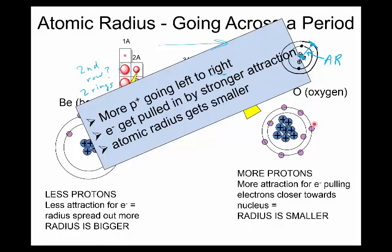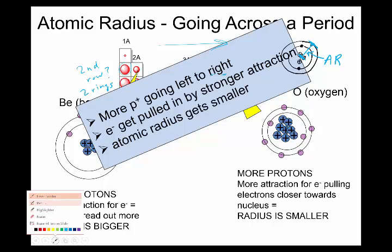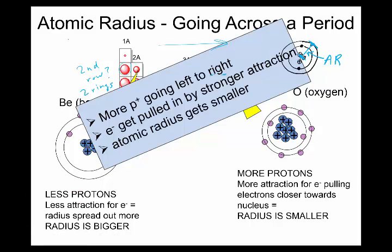All right, so one important thing to note here is if there's more attraction, so the two, these two trends, atomic radius and ionization energy, they go hand in hand. Ionization energy is defined as the amount of energy needed to pull away one of these electrons, to physically remove an electron, how much energy is needed.